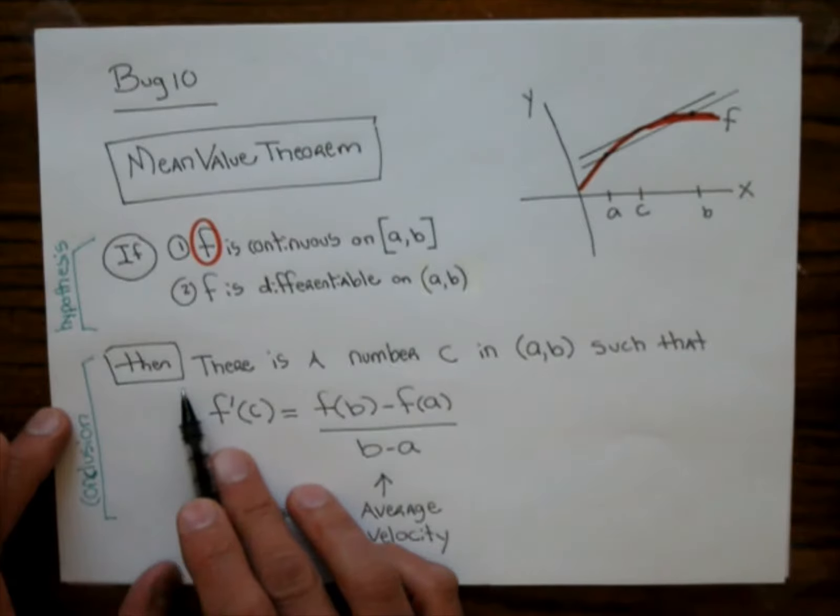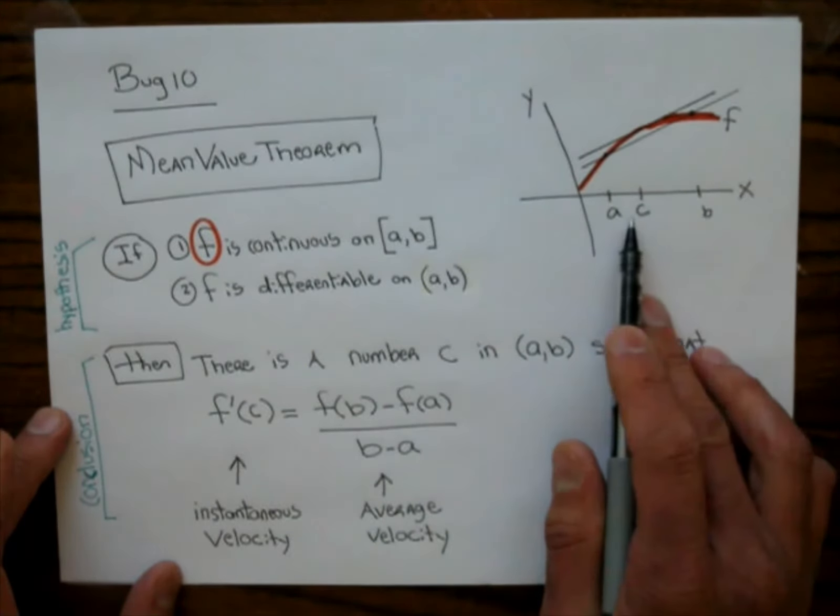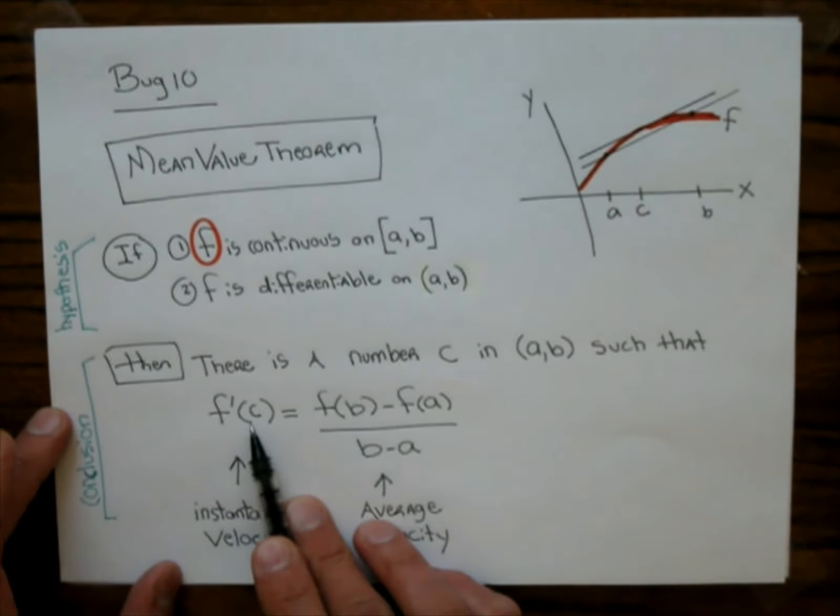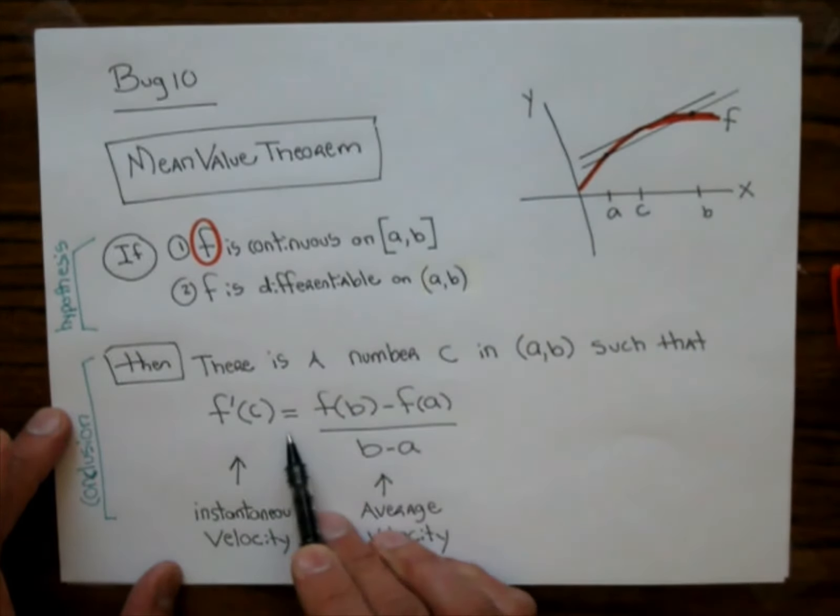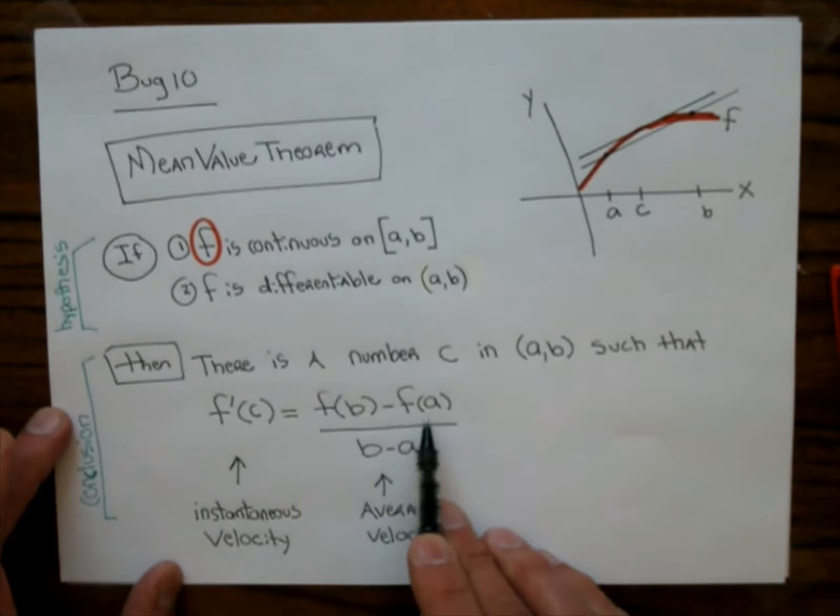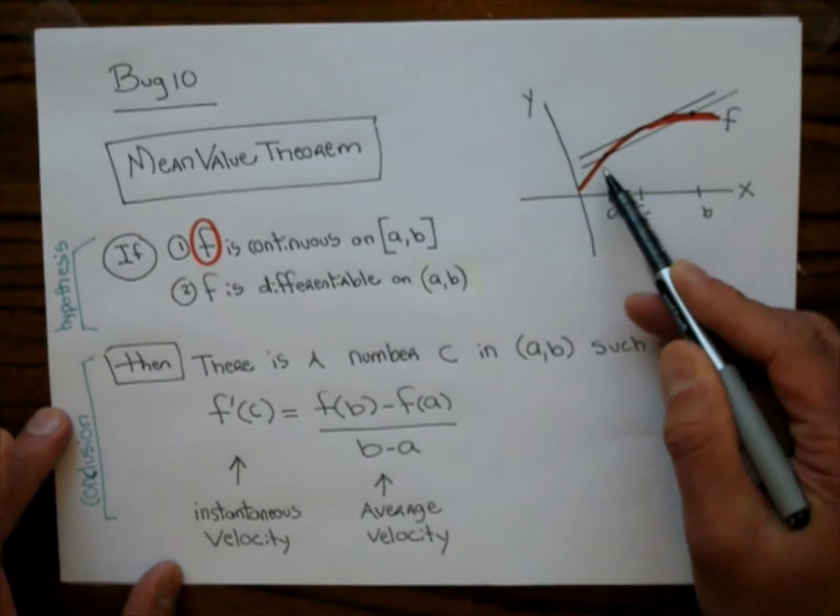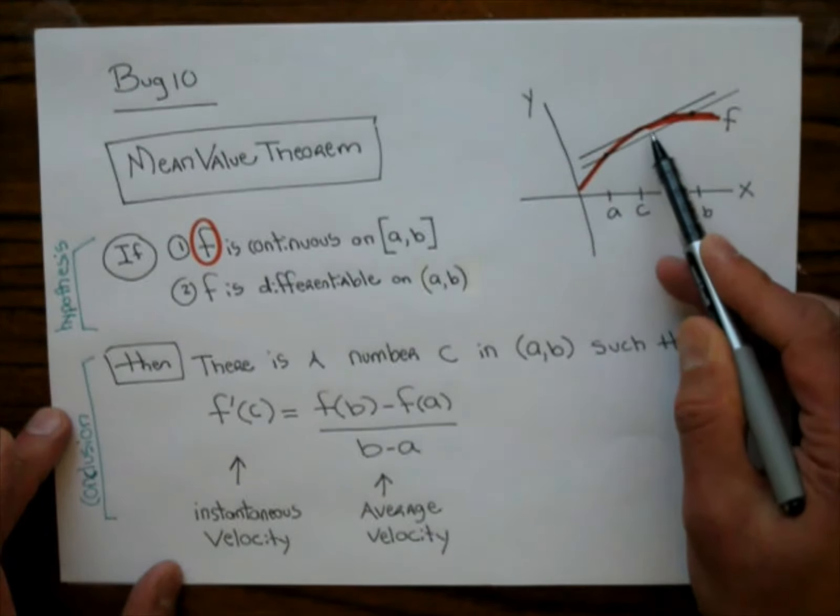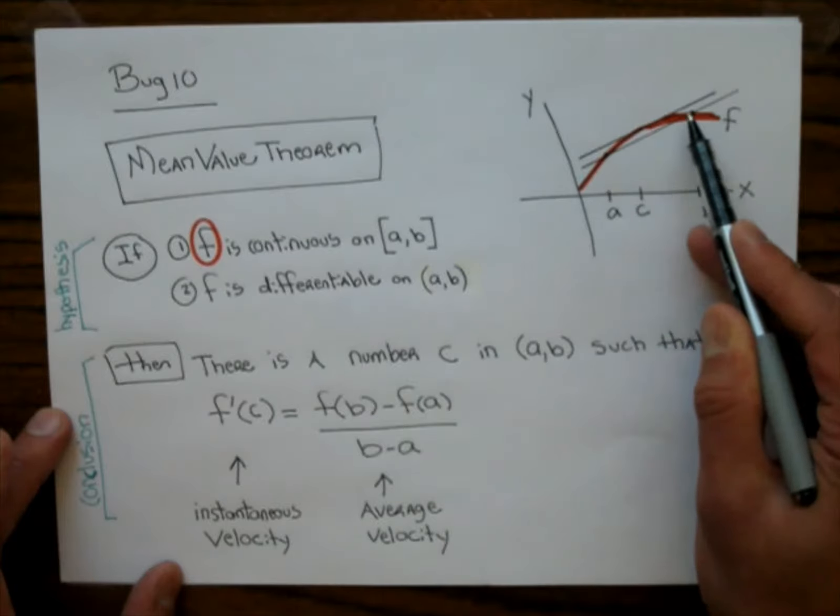The conclusion, then, there is a number c inside (a,b), and I have a c right there such that f prime c, that kind of represents the slope at c, which is this top line right here, that equals f(b) minus f(a) over b minus a, which is actually the slope of the secant line which connects the points a and b. And so you can see those two lines, this secant line and this tangent line are parallel.